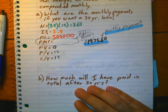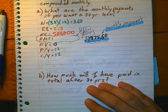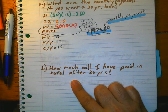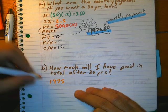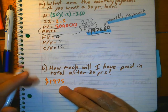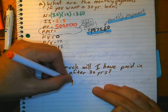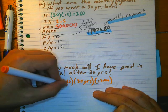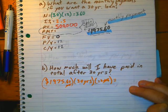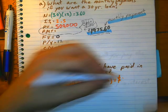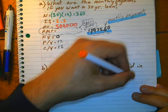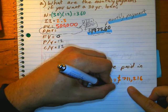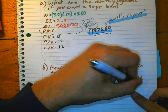How much will I have paid after 30 years? In order to figure that out, we're going to take this amount, $1,975.60, times 30 years, times 12 months, and then we get approximately $711,216. So, this is how much you pay after 30 years.